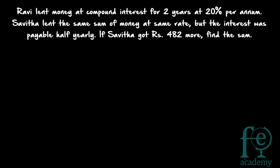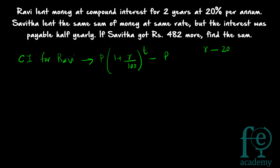But what is the difference? Devi is lending money at compound interest per annum, but Savitha is lending money so that the interest was payable half yearly. Savitha is getting Rs.482 more, and you have to find the sum. So you have to write down the equations for both. In the first case, the compound interest formula is equal to amount minus principal. The formula for amount is: Amount = P × (1 + R/100)^T − P. Here R = 20% and T = 2.